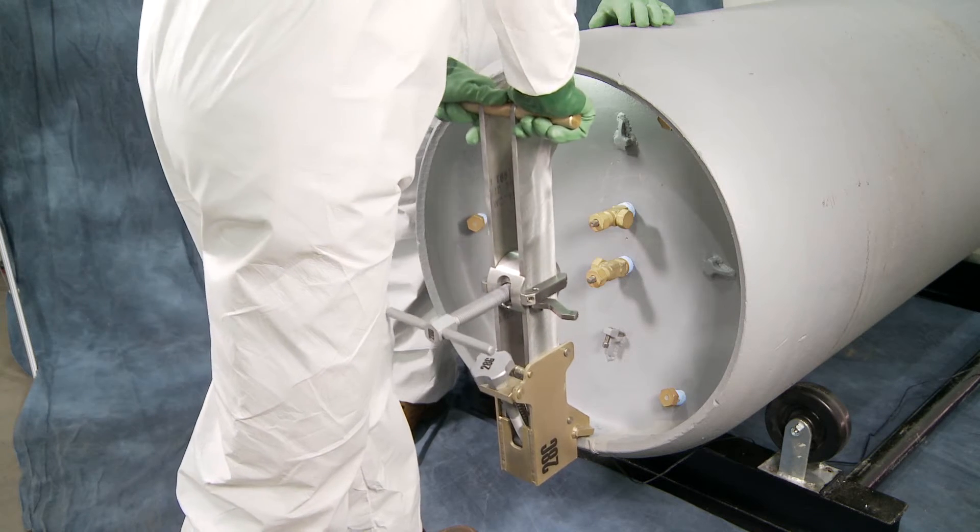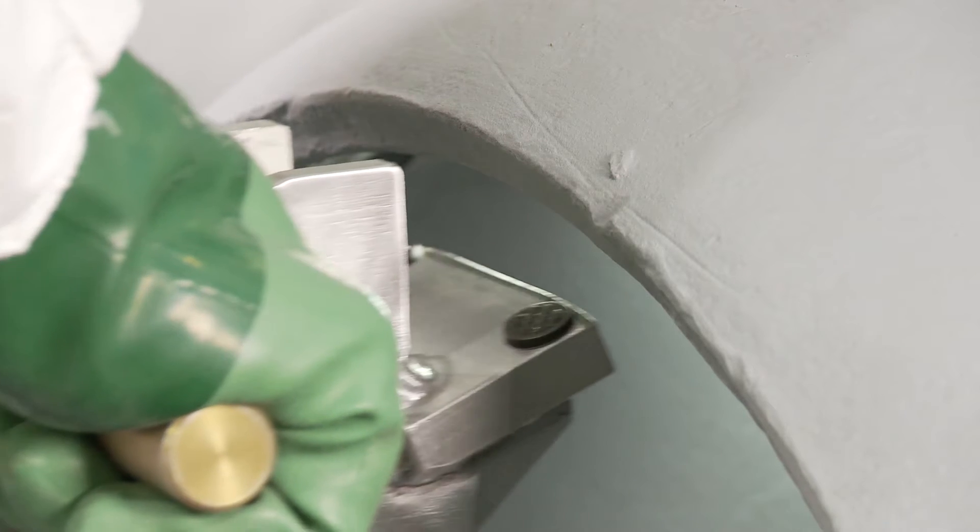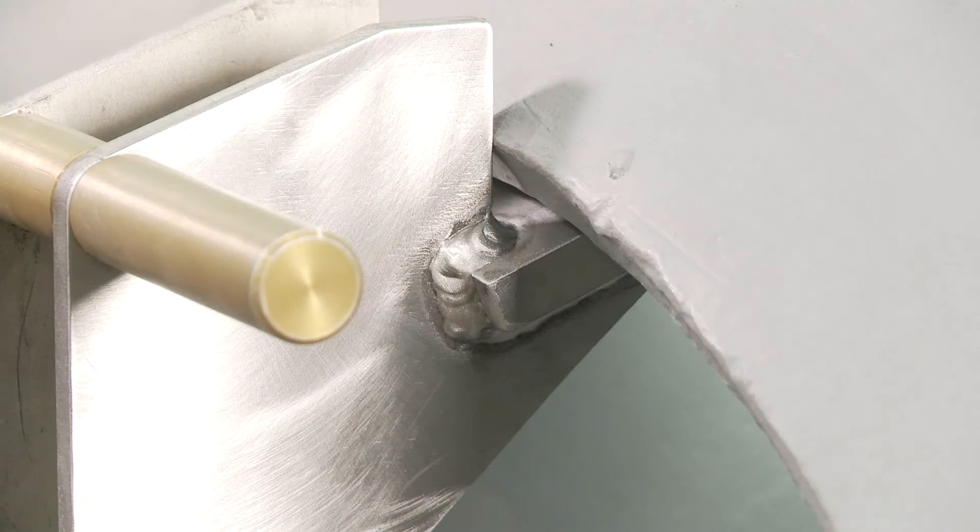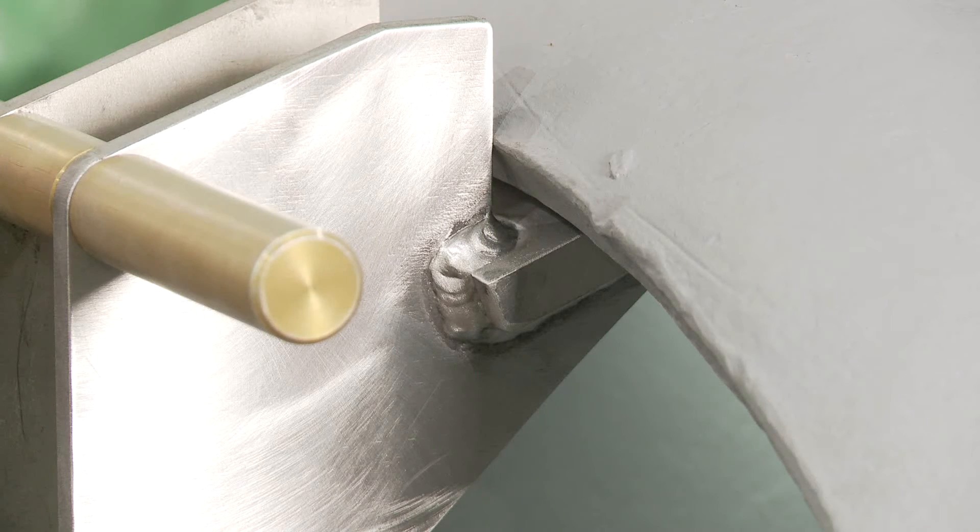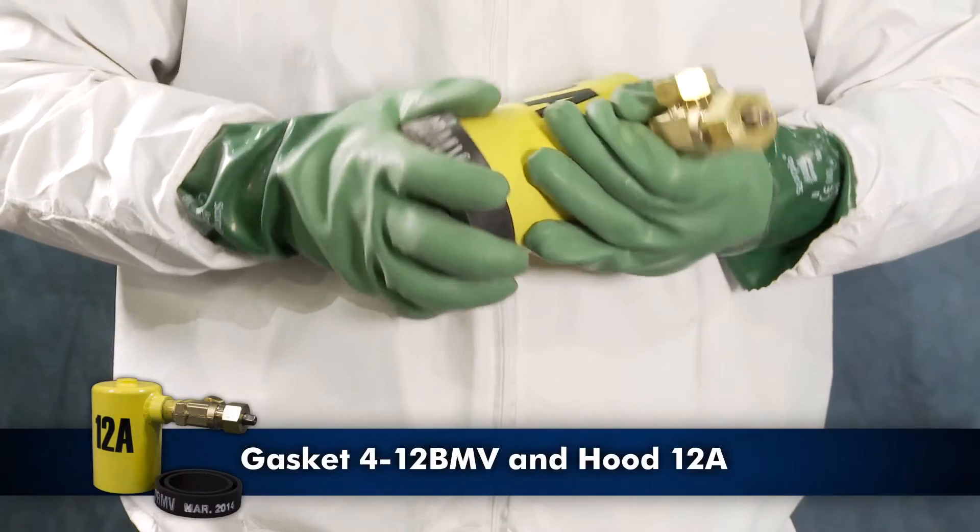Compress assembly downward using handles. Insert the upper end of bar assembly inside the chime. Reduce resistance to allow unit to expand into the upper chime lip with the upper bar extensions resting on the outside of the chime. Place a new gasket on hood 12A.